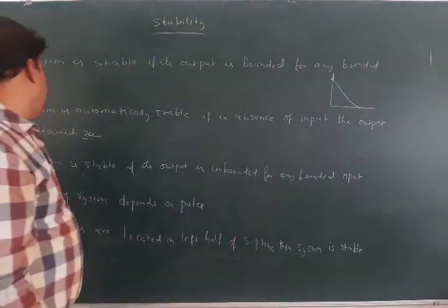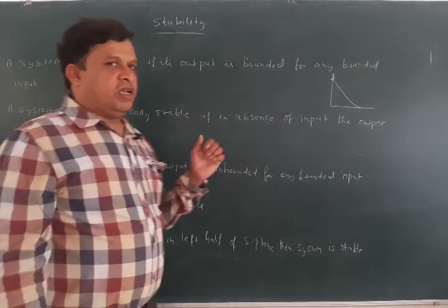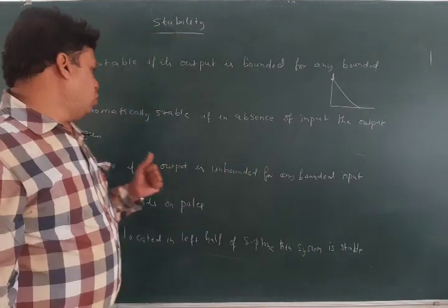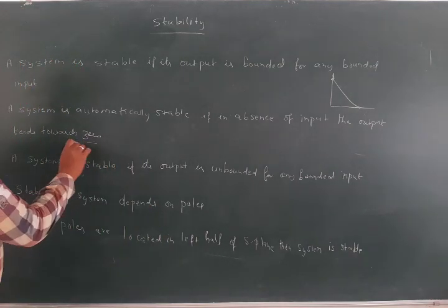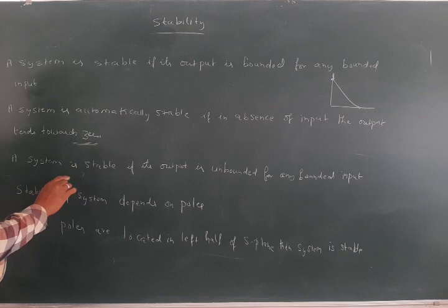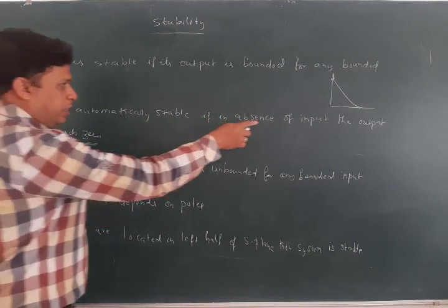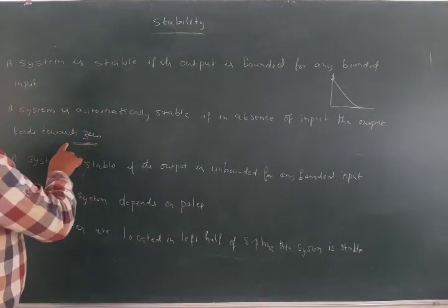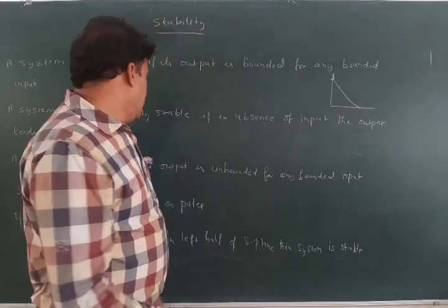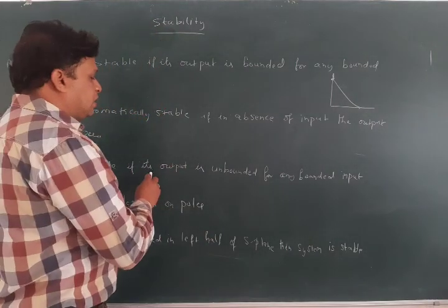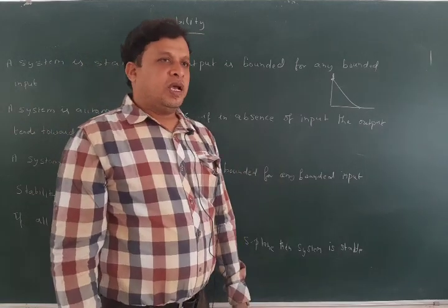The second condition: a system is automatically stable if, in the absence of input, the output tends towards zero. If the output is tending towards zero in the absence of input, then the system is also stable.